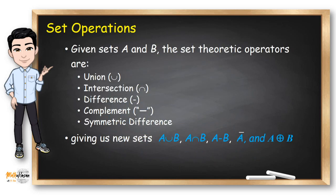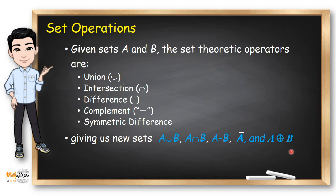And we can find these sets if we know the different kinds of set operations. Given sets A and B, the set theoretic operators are Union, Intersection, Difference, Complement, and Symmetric Difference — giving us new sets: A Union B, A Intersection B, A-B, Complement of A, and A Symmetric Difference B.